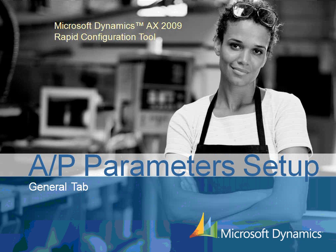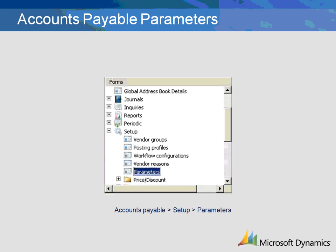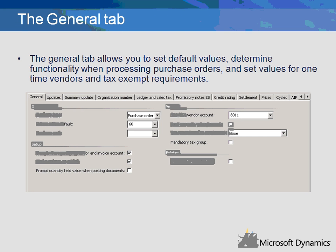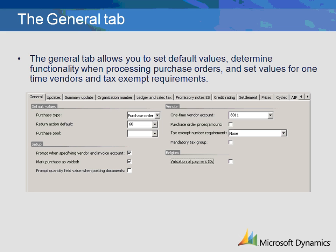Each tab of the Parameters form will be detailed in separate demonstrations. The Accounts Payable Parameters form is in the Accounts Payable module under the Setup folder. There are four sections within the General tab, and we will go into detail on each section.